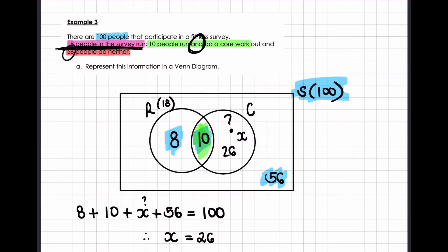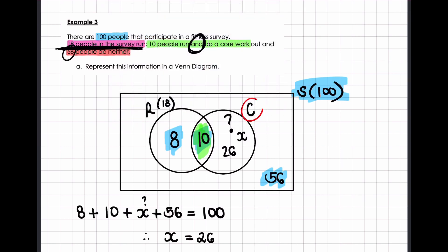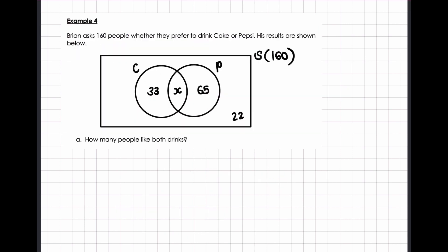So if the question were to ask how many people do a core workout in total, then I'd have 36 people do it in total. Brian asks 160 people whether they prefer to drink Coke or Pepsi.